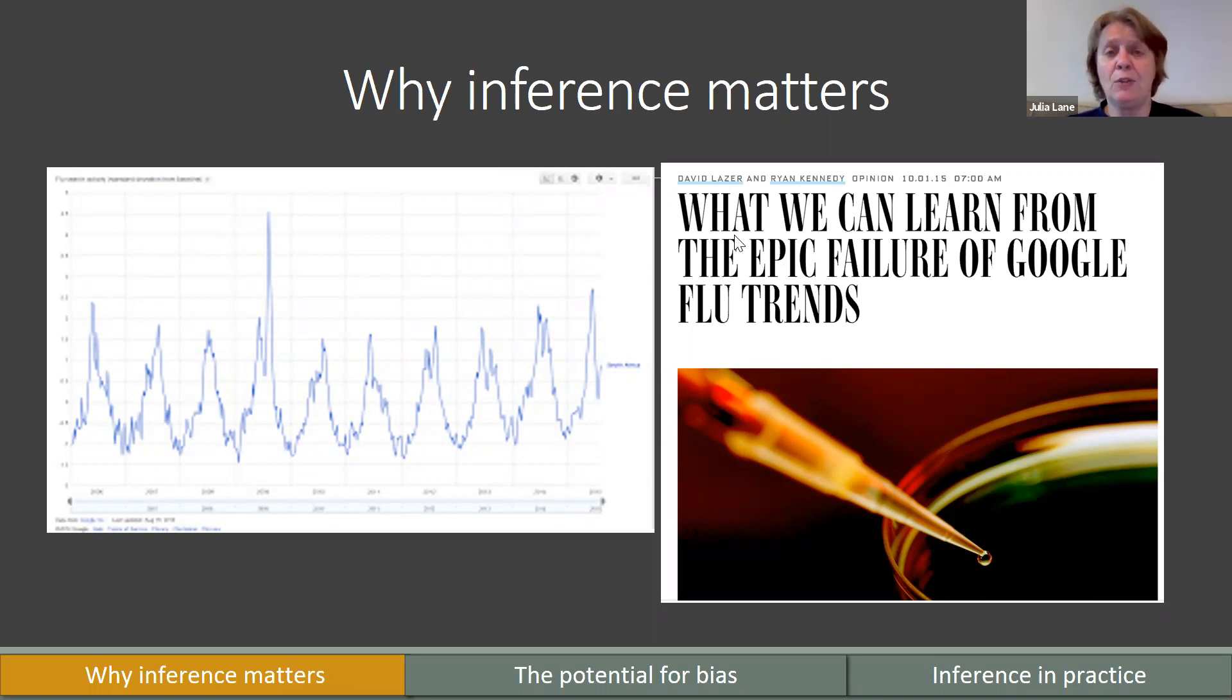So, these are two classic examples, very different, obviously, approaches to collecting the data. But the same core problem is the inference that was drawn was affected by the way in which the data was collected. So, that's, and it matters. It mattered for, obviously, the Chicago Tribune got left with egg on its face by making the wrong prediction. For the purposes of trying to figure out whether or not, and how to allocate resources, Google Flu Trends was not going to be as reliable as the CDC.